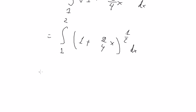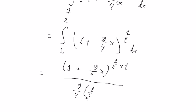And now we can get the final answer. The integral of this one you got 1 plus 9 over 4, x to the power of 1 over 2 plus 1, and we have 9 over 4 multiply with 1 over 2 plus 1, and we put the bounds in here.